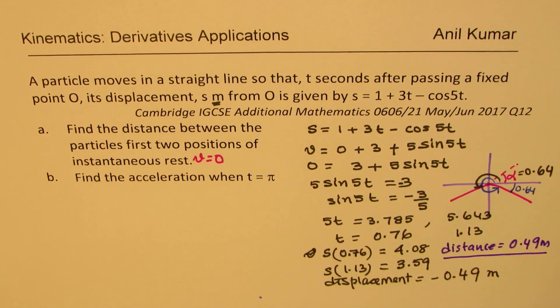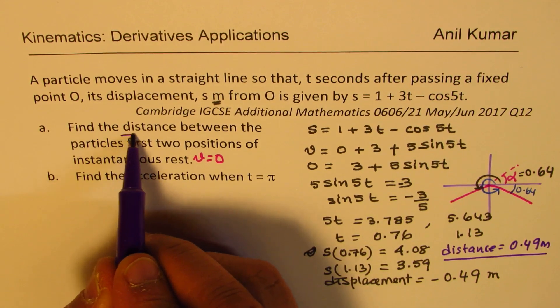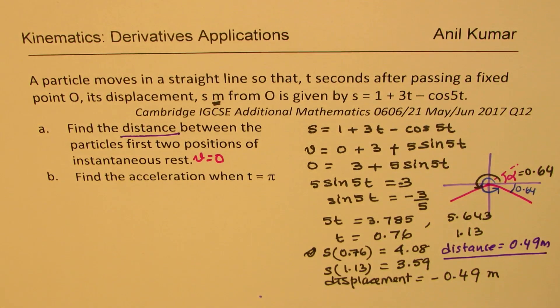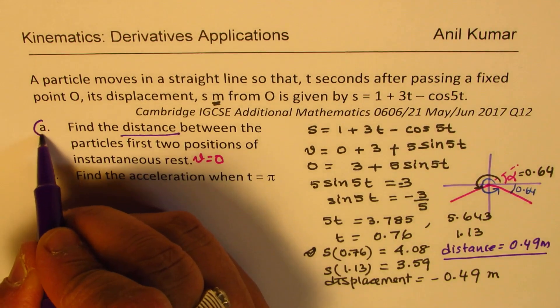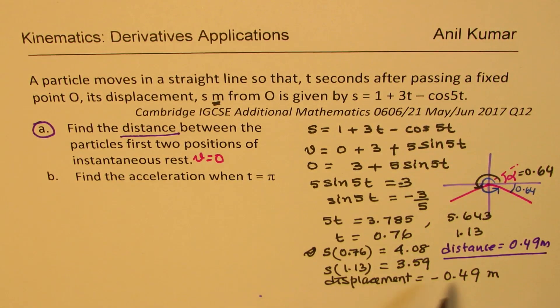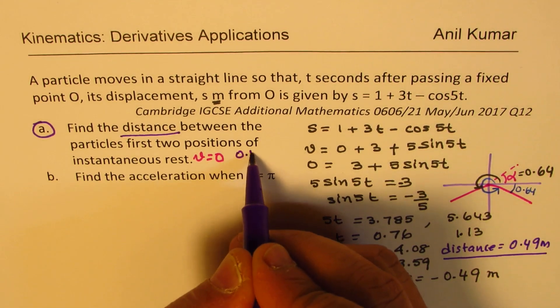Now since it is saying distance between, we'll write the absolute value. So the distance will be, distance will be always positive, 0.49 meters. Is that clear to you? So that is the displacement, the difference between them. However, we are interested in finding the distance. So distance is always a scalar quantity, positive. So that part is done, we have done part A and we got 0.49 as our answer.